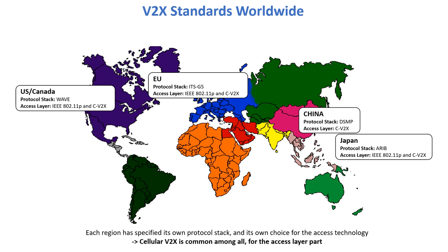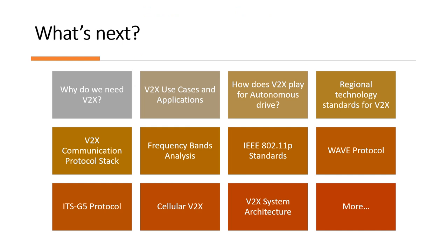Cellular V2X is common among all regions for the access layer. If you are not familiar with OSI layers and what the access layer or protocol stack means, upcoming videos will explain these concepts and the differences in V2X communication across regions.